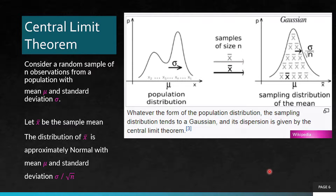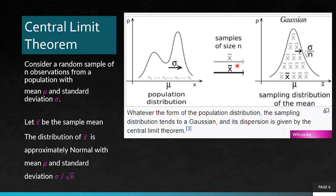The central limit theorem: consider a random sample of n observations from a population with mean mu and standard deviation sigma. This is a population distribution — it has some distribution, neither normal nor binomial, whatever it may be. What we do is take random samples from it. Each sample will have a mean x-bar, the sample mean. The distribution of x-bar is approximately normal with mean mu and standard deviation sigma divided by the square root of n, where n is the number of samples.